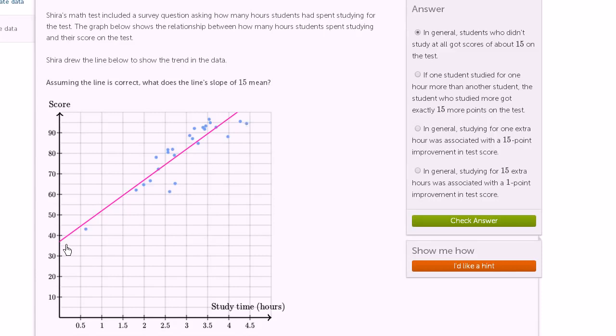And what Shira did is try to draw a line that tries to fit this data. And it seems like it does a pretty good job of showing the trend in the data. Now slope of 15 means that if I'm on the line, so let's say I'm here, and if I increase in the horizontal direction by 1...